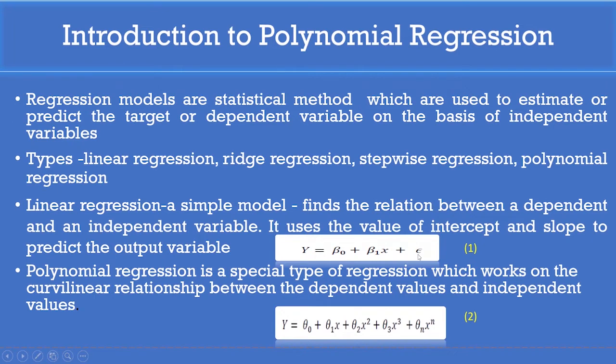Epsilon is called the error term which is computed in the progress of the model. Polynomial regression is a special type of regression which tries to map the relationship between independent and dependent variable by a curvilinear relationship. Equation 2 gives the polynomial regression model, where the predicted value y is computed based on the polynomial term of the independent variable x.